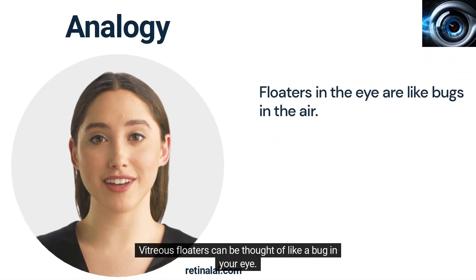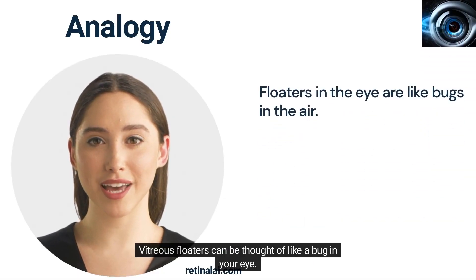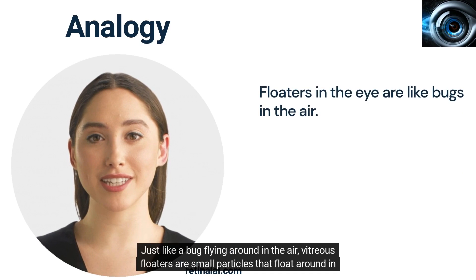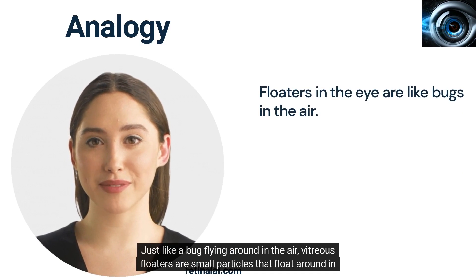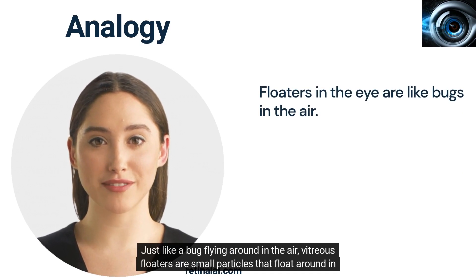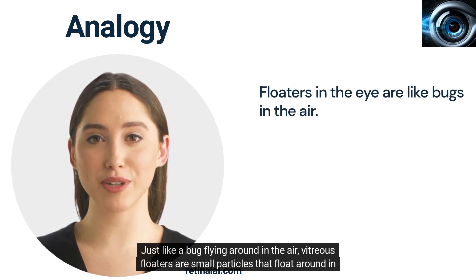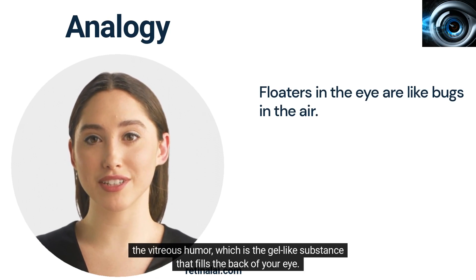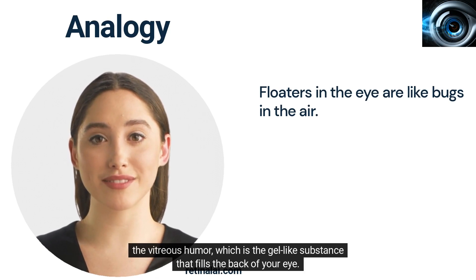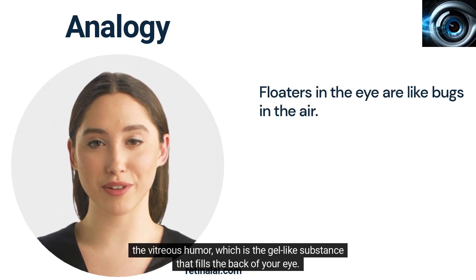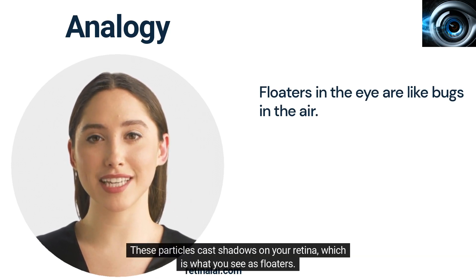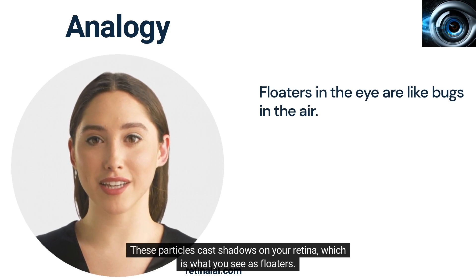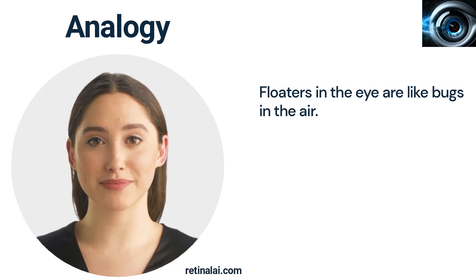Vitreous floaters can be thought of like a bug in your eye, just like a bug flying around in the air. Vitreous floaters are small particles that float around in the vitreous humor, which is the gel-like substance that fills the back of your eye. These particles cast shadows on your retina, which is what you see as floaters.